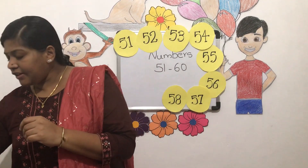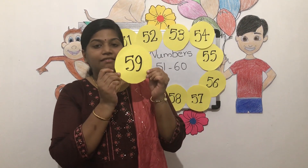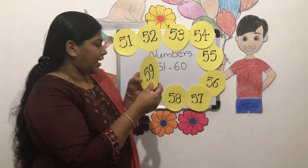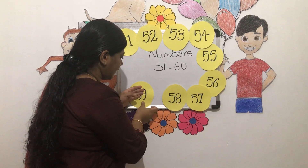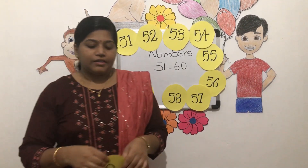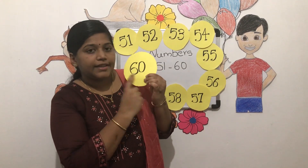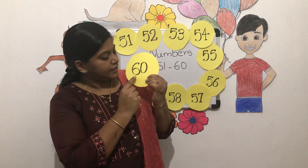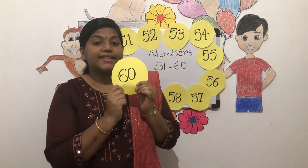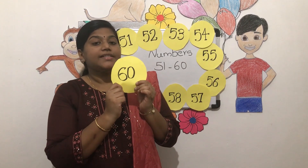After 58, what is the number? 5 9 — 59. Now what is the last number? It is something different — 6 0. There is one 6 and one 0. How do we read this? It is 60.